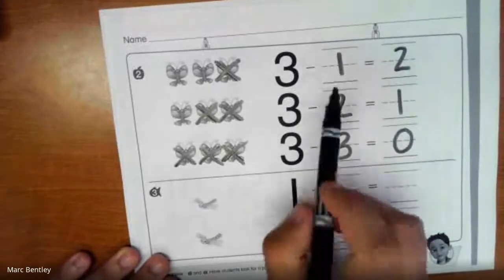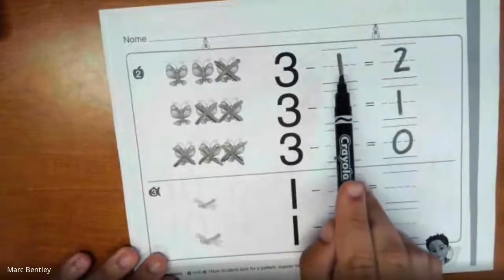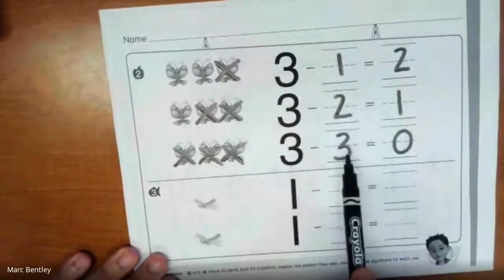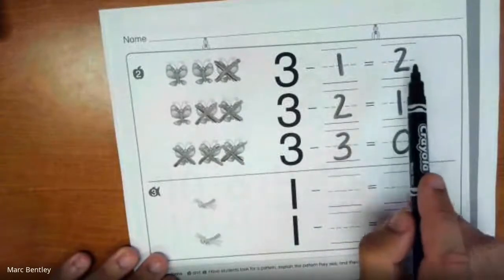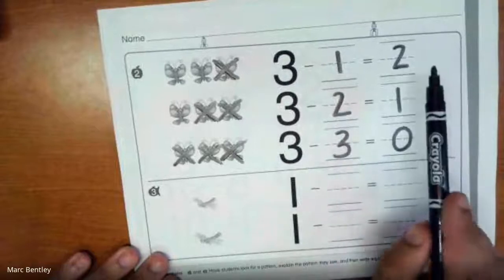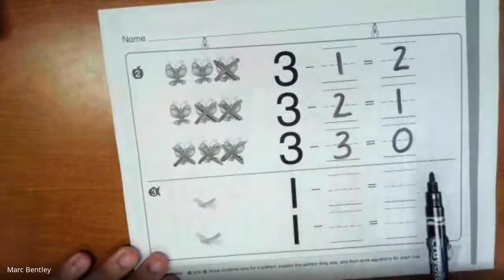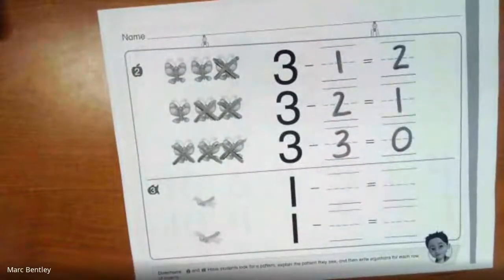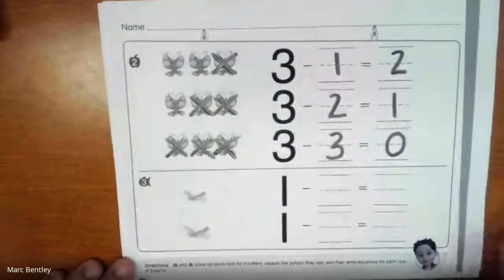So as we can see from the pattern here, the more butterflies that we take away, the less that we have left. So as this counts up, the answer counts down. Okay, nice job. Number 3.